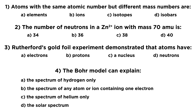This first question is asking about atoms with the same atomic number but different mass numbers, and we have some options there. The second question asks the number of neutrons in a zinc 2 plus ion that has mass 70 atomic mass units. Number three: Rutherford's gold foil experiment demonstrated that atoms have — and we have some options there. And then the Bohr model can explain, with four options as well.